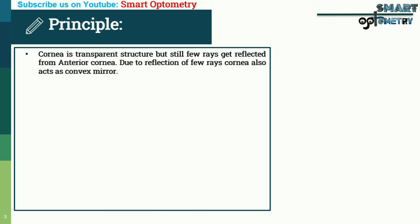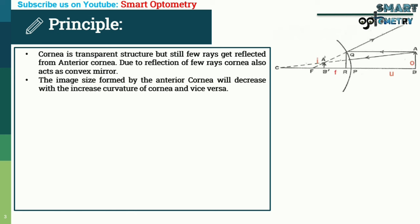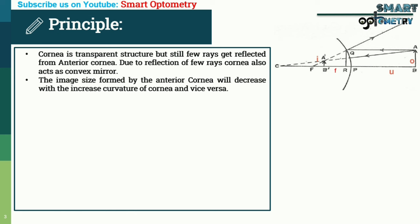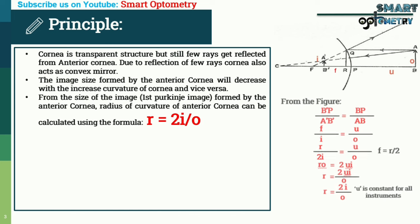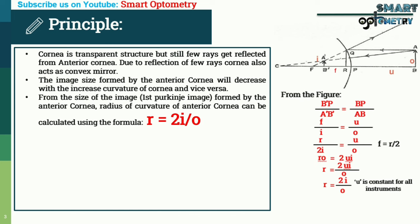The principle of keratometer: the cornea is a transparent structure, but still a few rays get reflected from the anterior cornea. Due to this reflection, the cornea also acts as a convex mirror. The image size formed by the anterior cornea decreases with increased curvature and vice versa. From the size of the first Purkinje image formed by the anterior cornea, the radius of curvature can be calculated using the formula R = 2i / O.